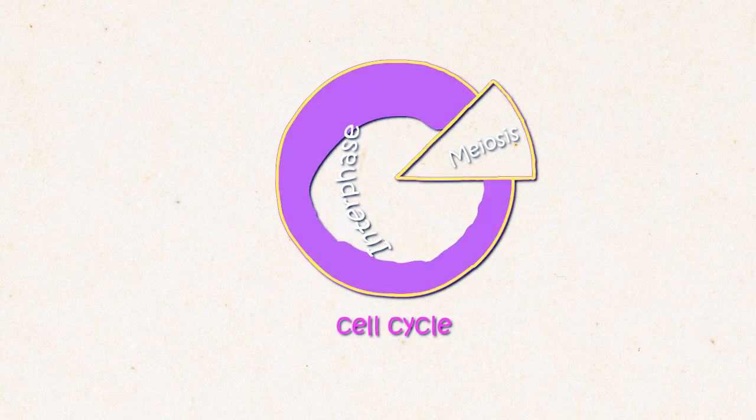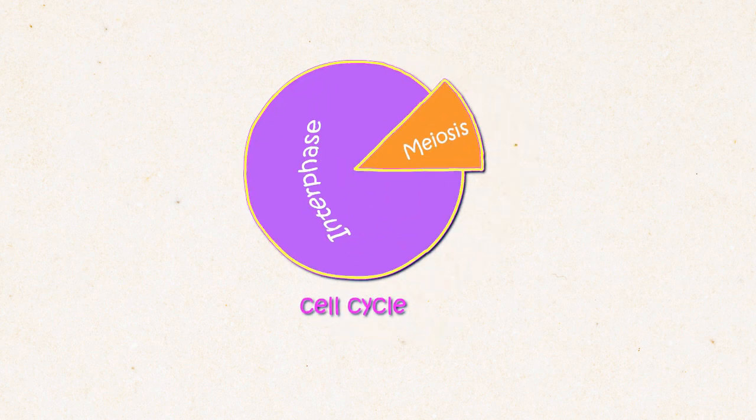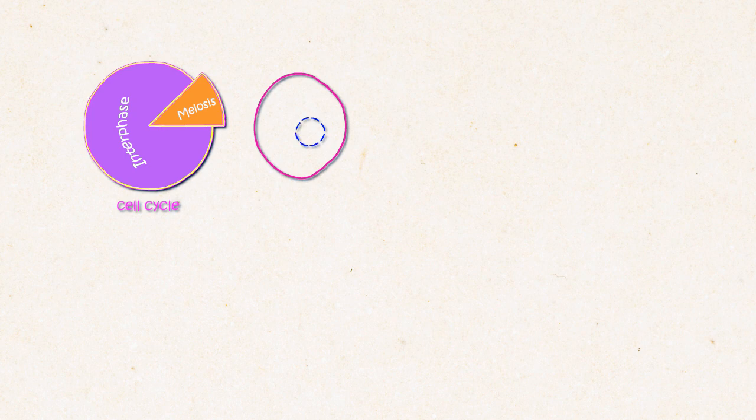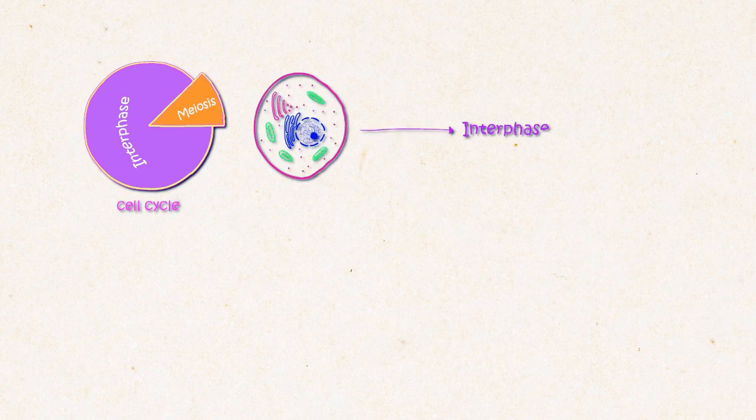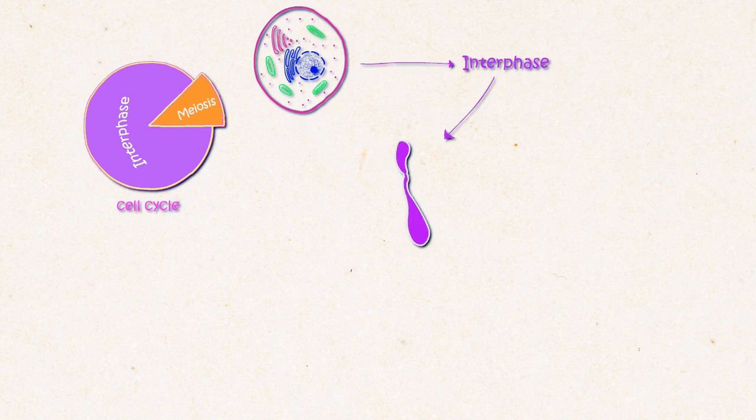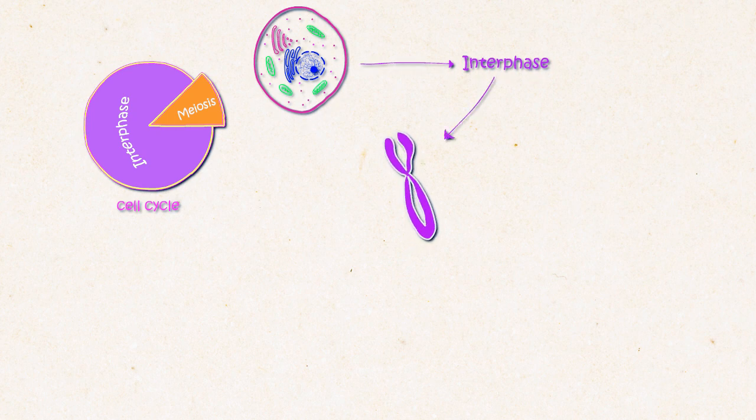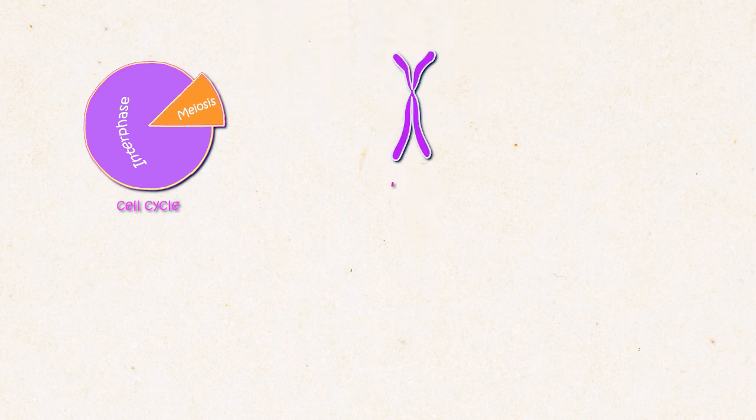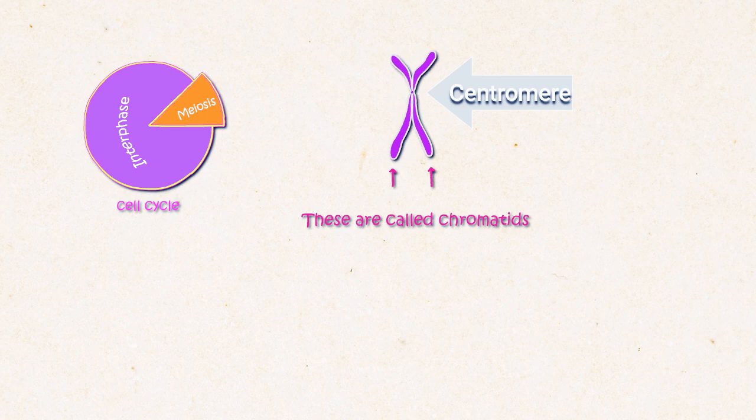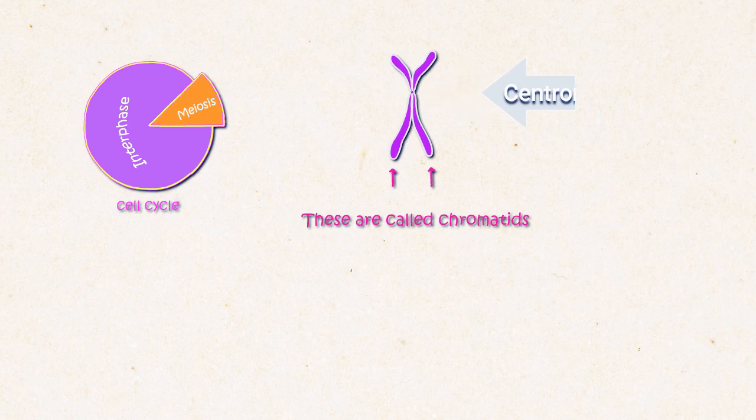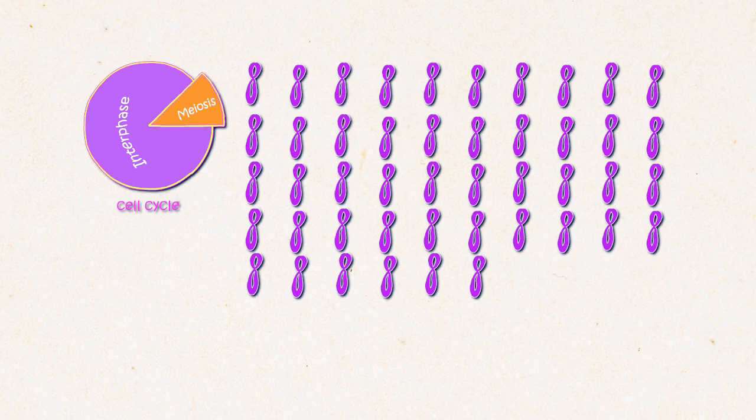Before a cell goes into mitosis or meiosis cell divisions they go through a phase which is called the interphase. What happens in the interphase is the duplication of the DNA which results in the formation of two identical chromatids of a single chromosome. They are called the sister chromatids. They remain joined together at the centromere. This way a cell nucleus gets 92 chromatids.